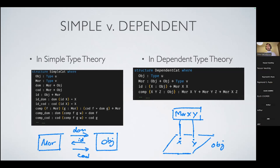In the dependent formulation, I have identity and composition as dependent functions — so identity of x lands in morphisms from x to x, while identity of y lands in morphisms from y to y. Composition similarly is a dependent function. This way of encoding category structure is very similar to how we do enriched category theory. In fact, if you write category theory as a category enriched in sets, this is the kind of formulation you get.